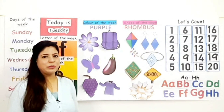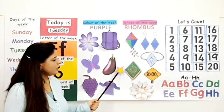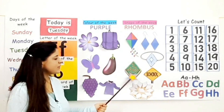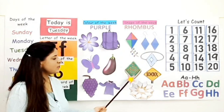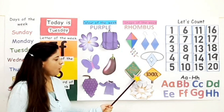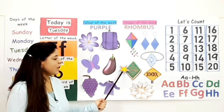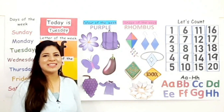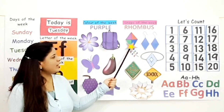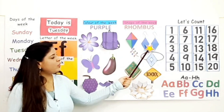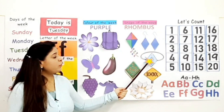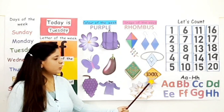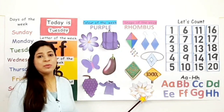Now let's see the shape of the week. Shape of the week is rhombus. Rhombus is a four-sided shape. It has four sides and four corners. All the sides of a rhombus are equal and the opposite sides are parallel. Now let's see the pictures: rhombus shape kite, rhombus shape earrings, rhombus shape ring head, rhombus shape Christmas cookie, rhombus shape sign boat, rhombus shape sweet.